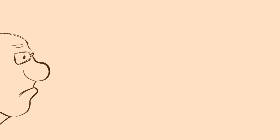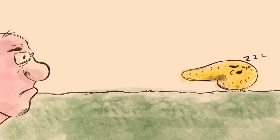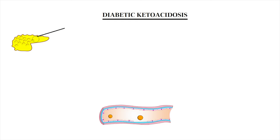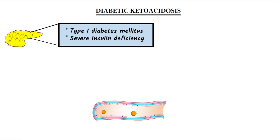Hello everyone. Today in this video we will discuss the pathogenesis of diabetic ketoacidosis. Diabetic ketoacidosis is mainly caused in type 1 diabetes mellitus due to absolute or severe deficiency of insulin. It may be the first presentation of undiagnosed diabetes mellitus, as they don't know they have diabetes and there is no external insulin supply.